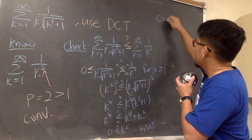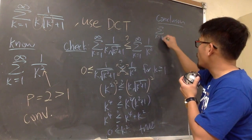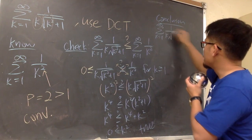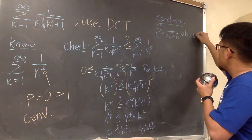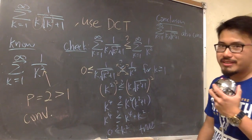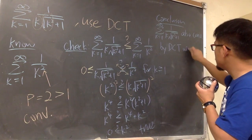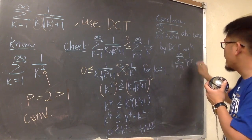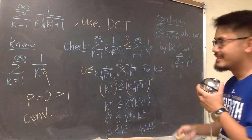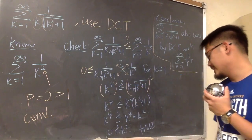The original series, sigma when k goes from 1 to infinity of 1 over k times square root of k squared plus 1, converges by the direct comparison test with sigma 1 over k squared. The process is: put down what you know, do the check, write the conclusion. That's it.